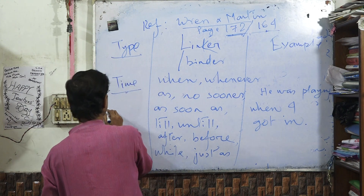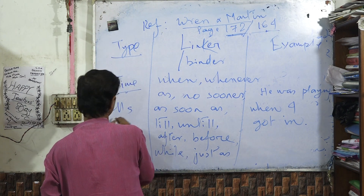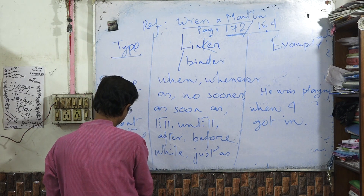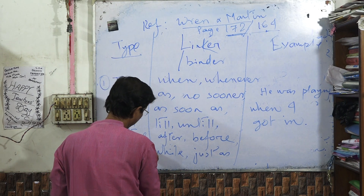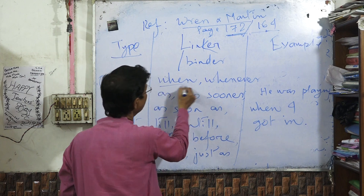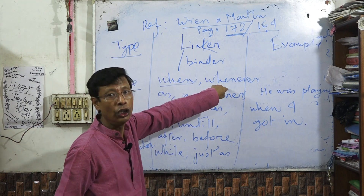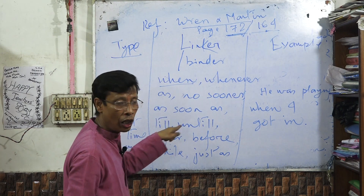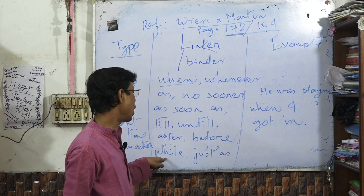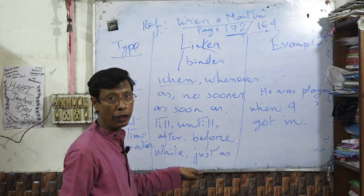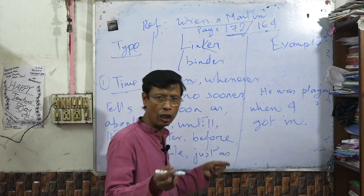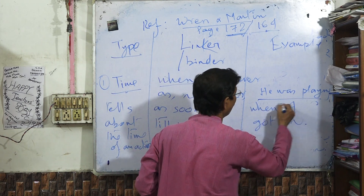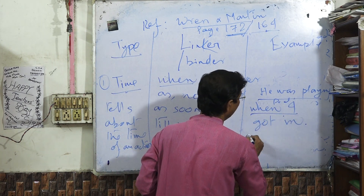The adverbial clause of time tells about the time of an action. The linkers (conjunctions/binders) used are: when, whenever, as, no sooner, as soon as, till, until, after, before, while, just as. These can also be termed as conjunctions.